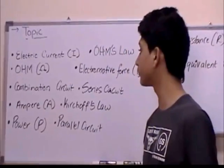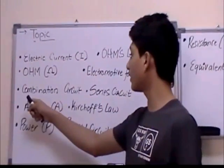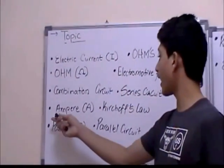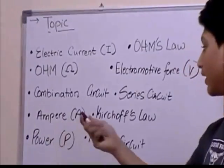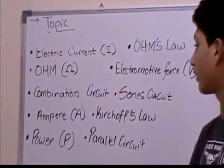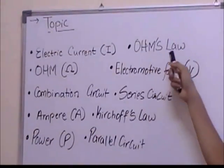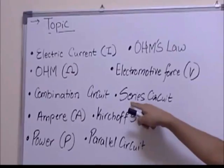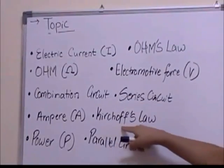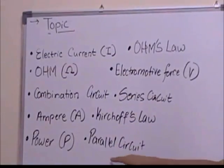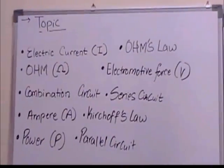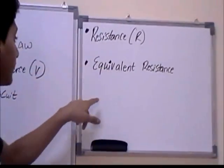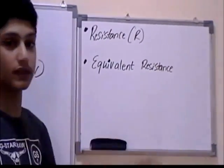The second thing is Ohm. The third thing is combination circuits. The fourth thing is ampere. Then power, Ohm's law, electromotive force, series circuit, Kirchhoff's laws, parallel circuit. And here we will also talk about resistance and equivalent resistance.